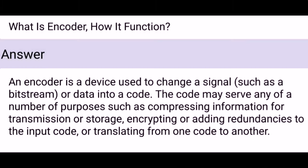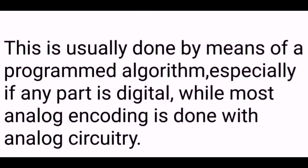What is an encoder and how does it function? An encoder is a device used to change a signal, such as a bit stream or data, into a code. The code may serve purposes such as compressing information for transmission or storage, encrypting or adding redundancies to the input code, or translating from one code to another. This is usually done by means of a programmed algorithm, especially if any part is digital, while most analog encoding is done with analog circuitry.